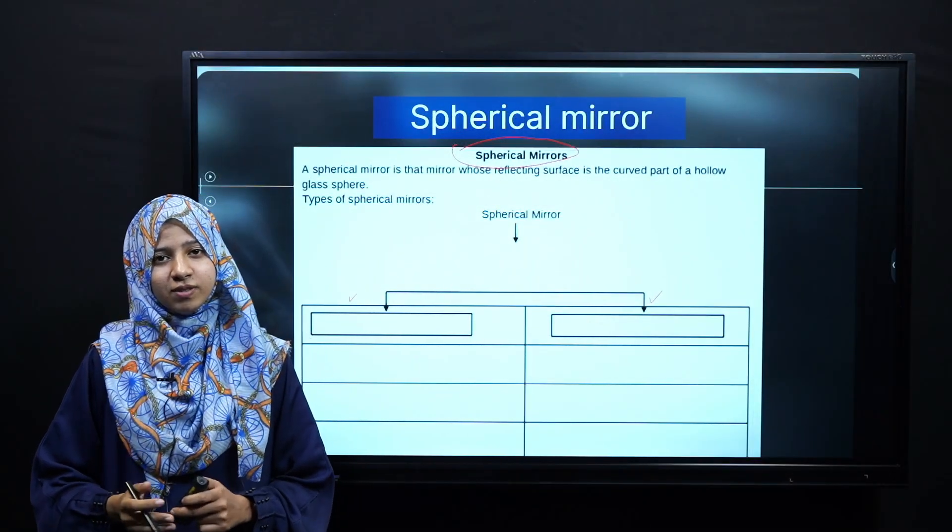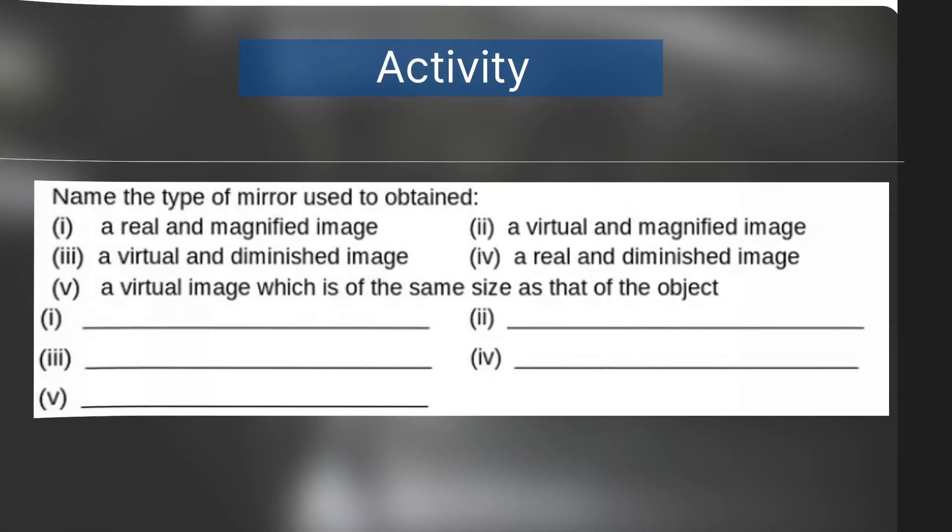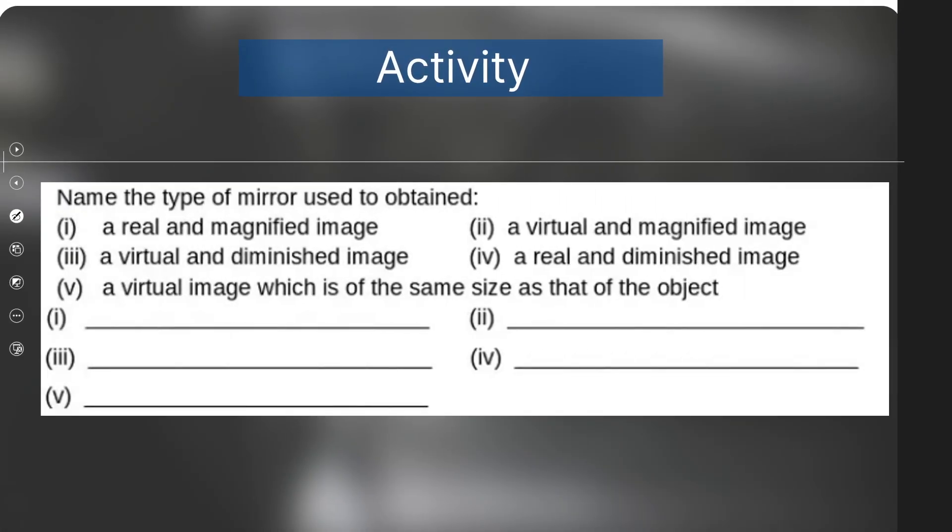Very good, so let's move towards the last activity. Yaha per aapko different descriptions di gayi hain. You have to name the type of mirror that are used to obtain these type of images. Yaha per khali spaces di gayi hain, so aap jaldi se har description ko read kijiye aur usse relevant mirror ka naam likhiye.